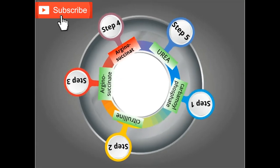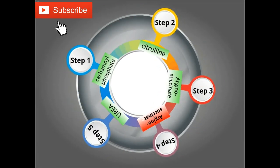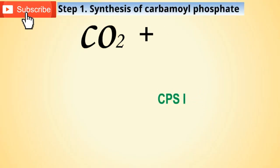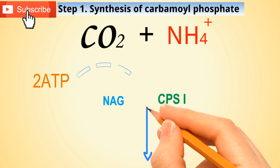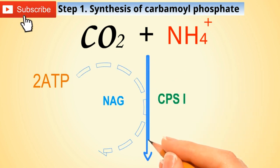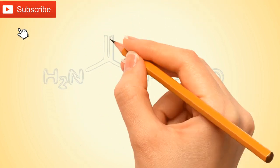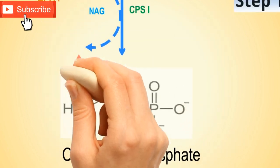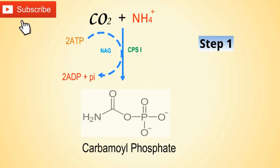We will now discuss each step in detail. CPS-1 combines carbon dioxide and ammonia in the presence of 2 ATP to form carbamoyl phosphate. It is an irreversible reaction which converts ATP into ADP.